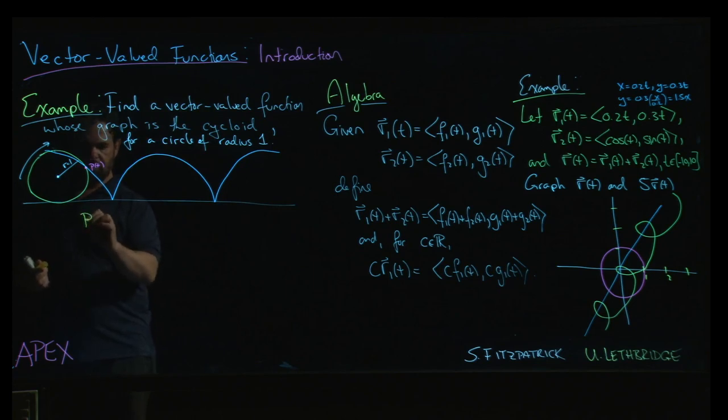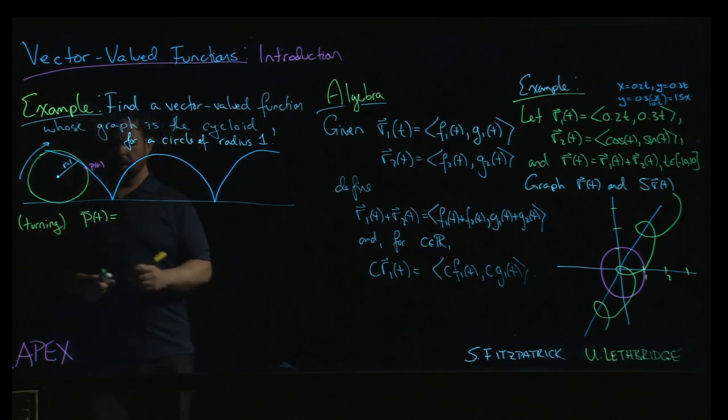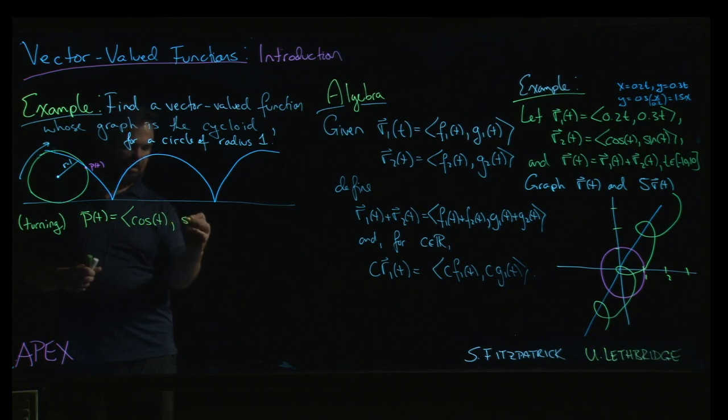So the first thing we might do is say, okay, so the P(t) describing the point on the circle, and this is kind of for the turning aspect of the rolling circle. Well, we know that for clockwise motion, for counterclockwise, we always do cos(t) sin(t). For counterclockwise, reverse the direction.